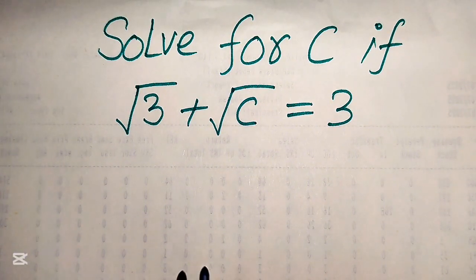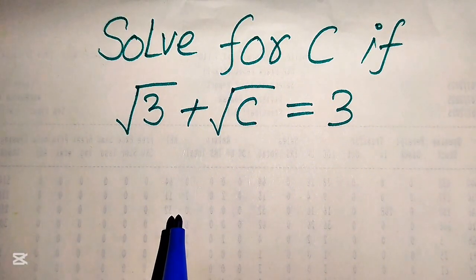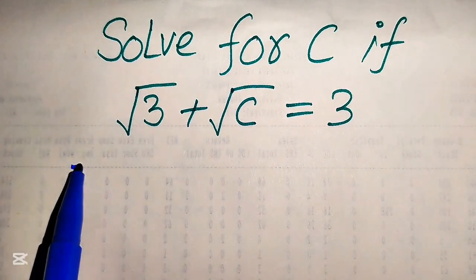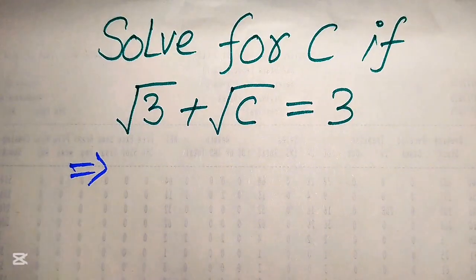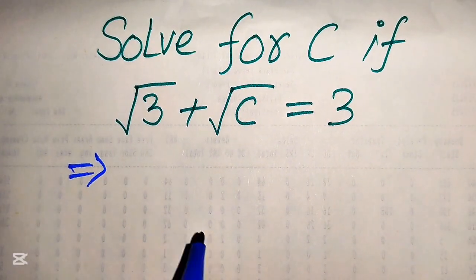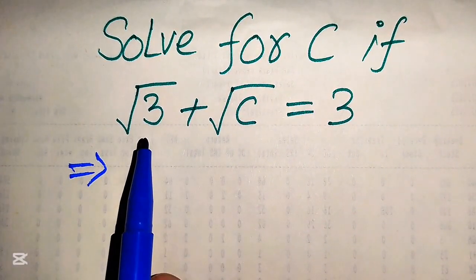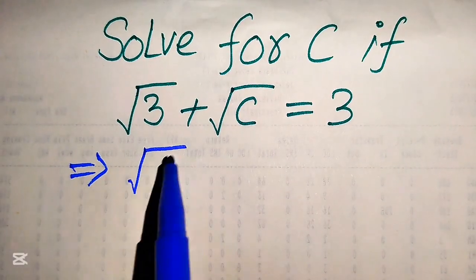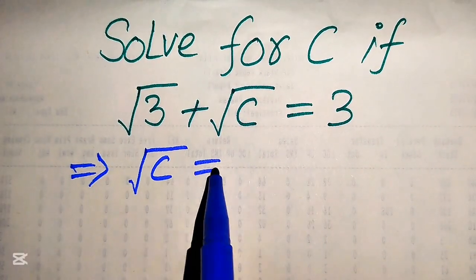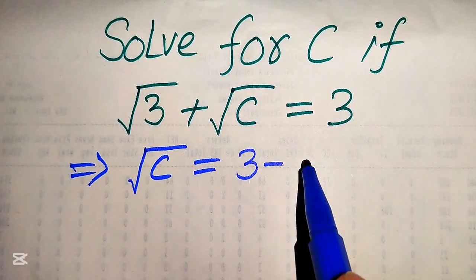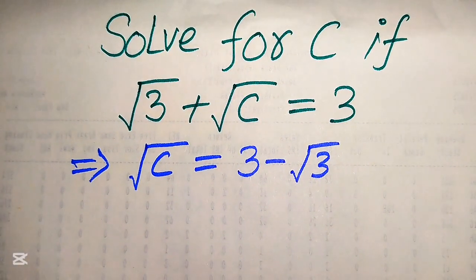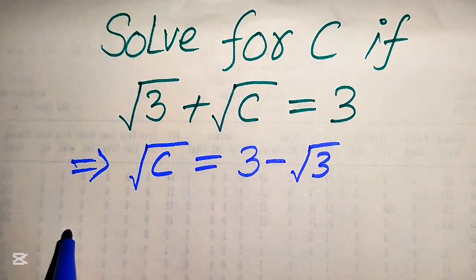Now here you can see that on the left-hand side both terms involve a square root sign, so our first target is to eliminate the square root sign from both terms. For this, we move square root of 3 to the right-hand side.